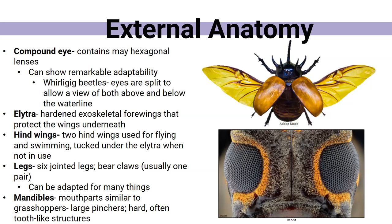For instance, whirligig beetles can see above the water line and below the water line at the same time — not all insects can do that. The elytra are the hardened exoskeleton forewings that protect those fragile wings underneath. The hind wings are used for flying and when not in use are tucked under the elytra — and sometimes they're even used for swimming. There are beetles that are aquatic and use them for swimming.